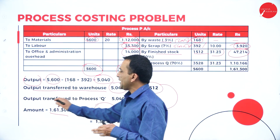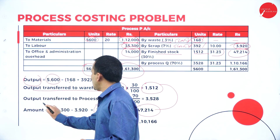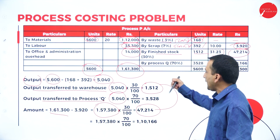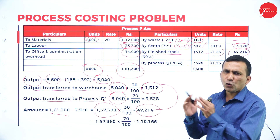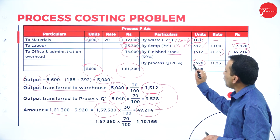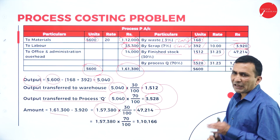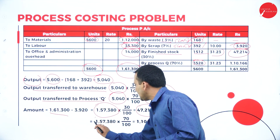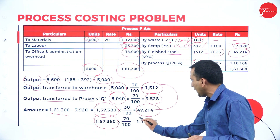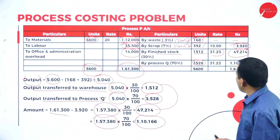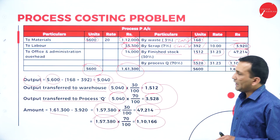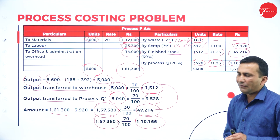Dividing ₹47,214 by 1,512 units gives the rate per ton of ₹31.23. For the transfer to the next process: 70 percent of 5,040 = 3,528 units. Taking 70 percent of ₹1,57,380 = ₹1,10,166. Dividing ₹1,10,166 by 3,528 units also gives ₹31.23 per ton. This is now carried forward to Process Q's debit side.